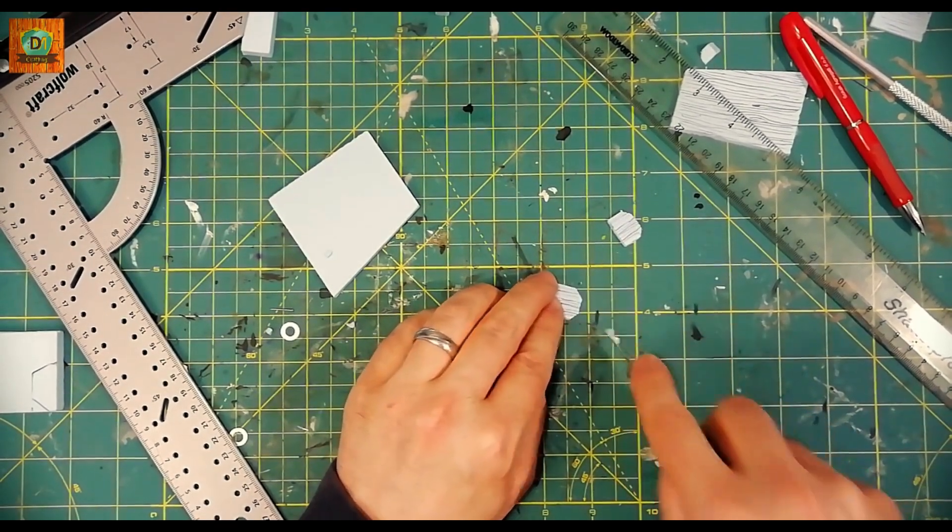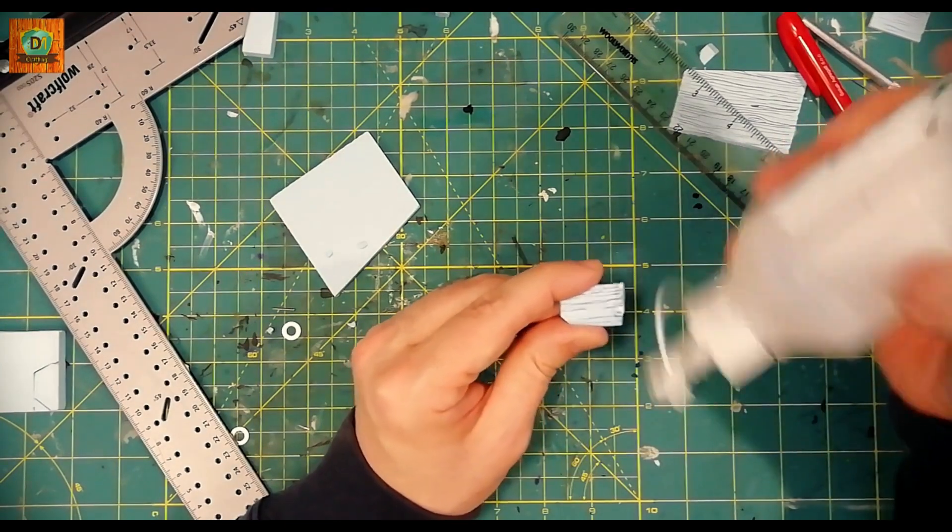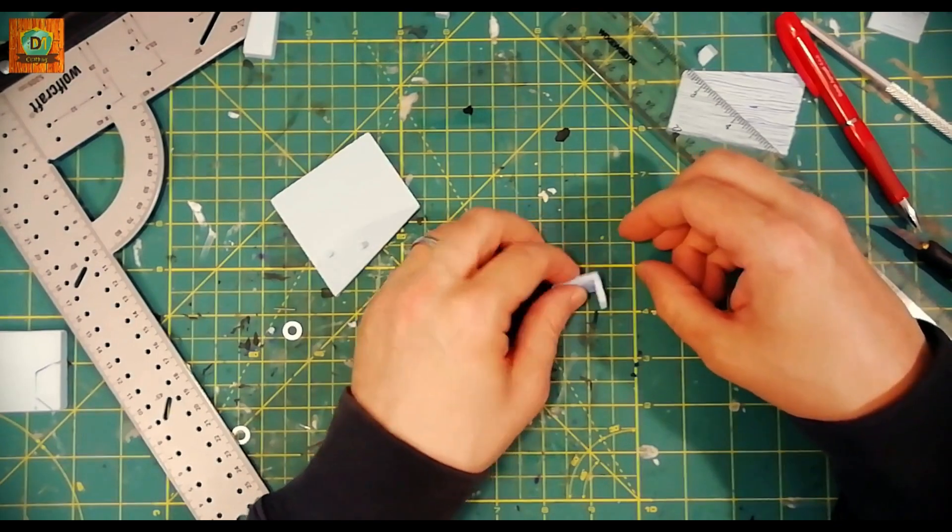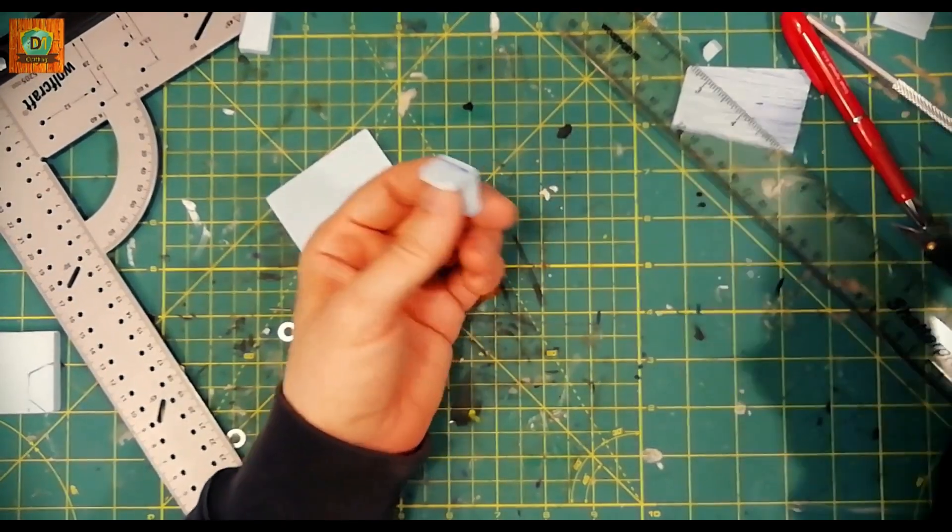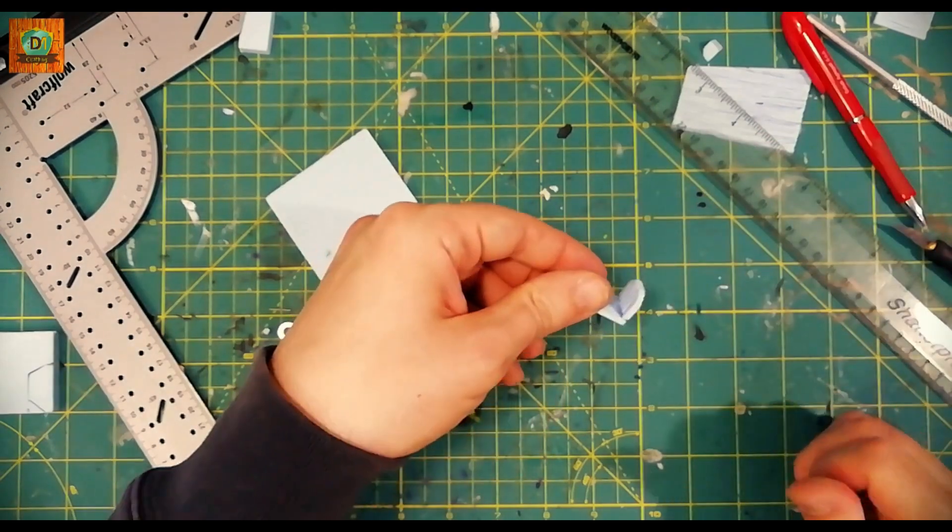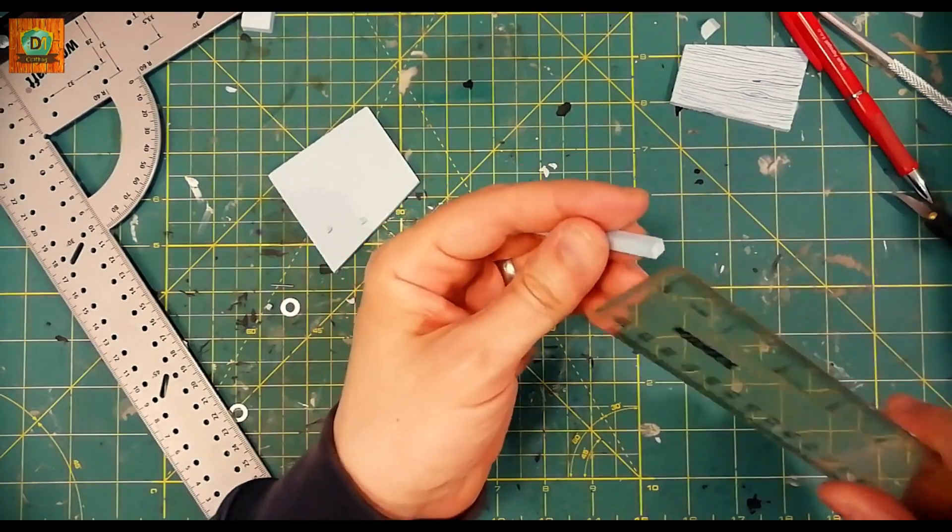I glue the little one on the big one with a straight angle. You can use PVA glue or hot glue, whatever. I prefer to use some plastic glue because it's very rapid to attach and it's clean.